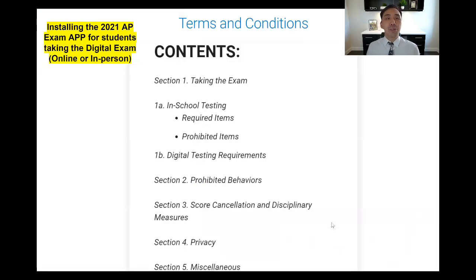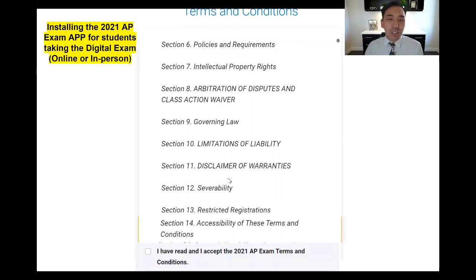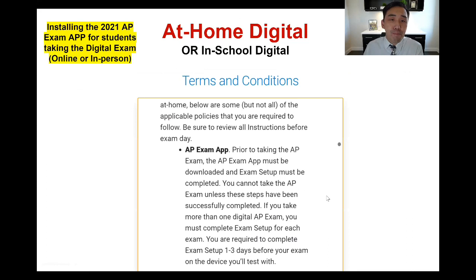Next, it's going to have you agree to the terms and conditions. You are signing this, so my best advice is to read it — most people don't. I've walked through a few important things you need to know. There are 14 sections to go through before you click 'Read and Accept.' This is the digital AP exam app and you have to install it in order to take the AP exam.